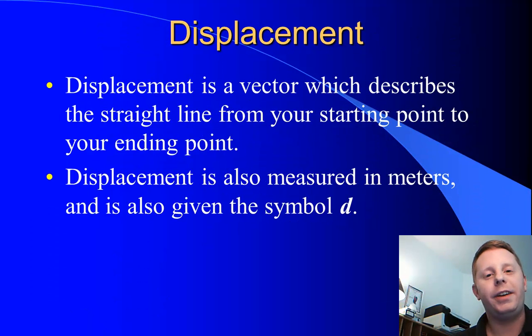Displacement on the other hand is a vector quantity. It tells you the straight line distance from where you start to where you finish, regardless of the path you've chosen. It's also measured in meters, and what's tricky is it's given the same symbol D. So you've got to really know what you're talking about when you go into distance and displacement.